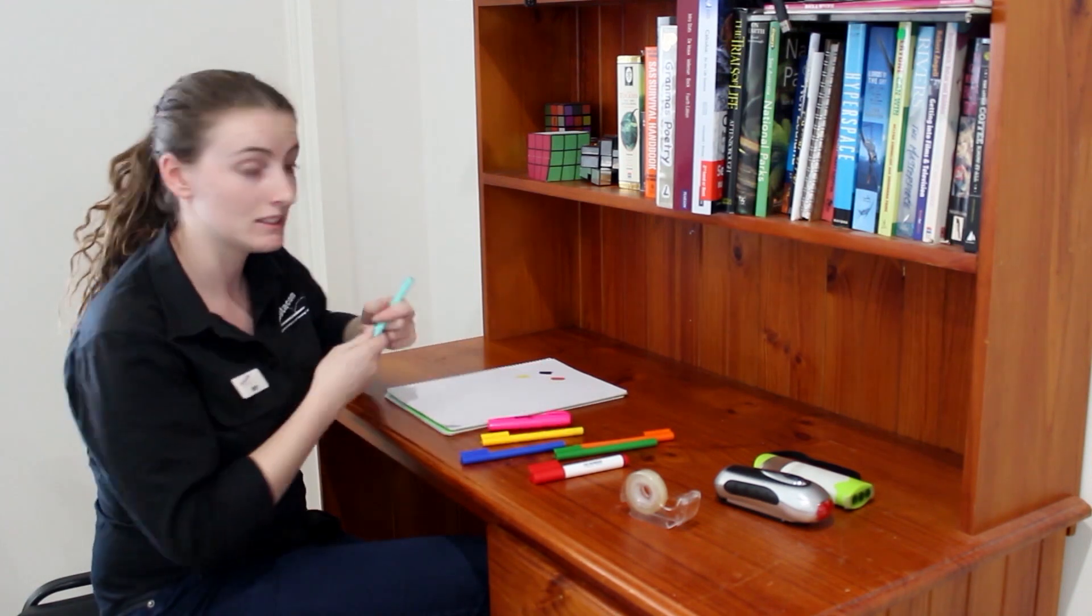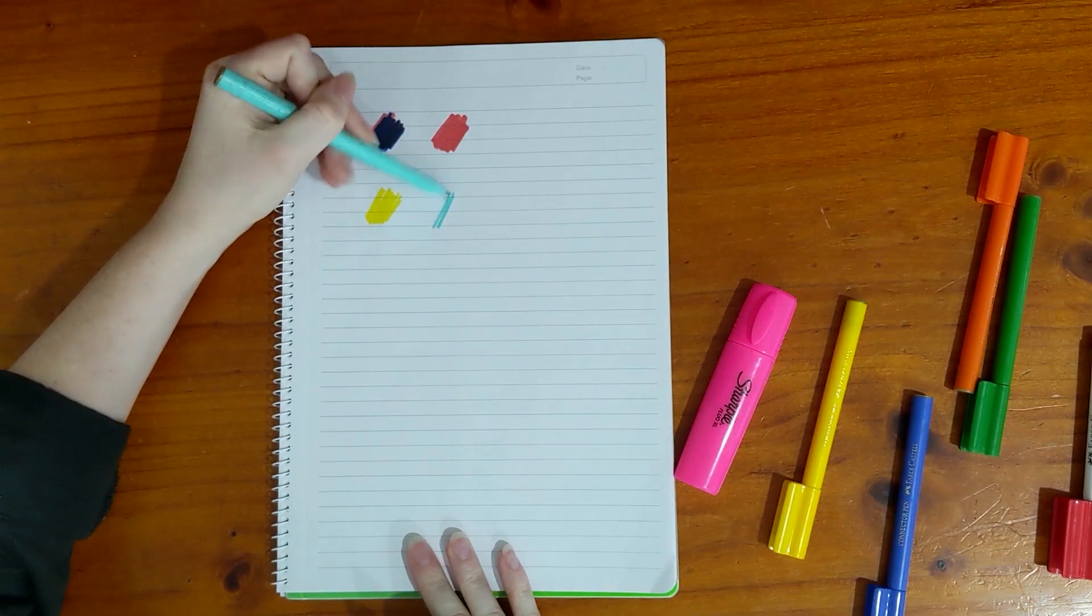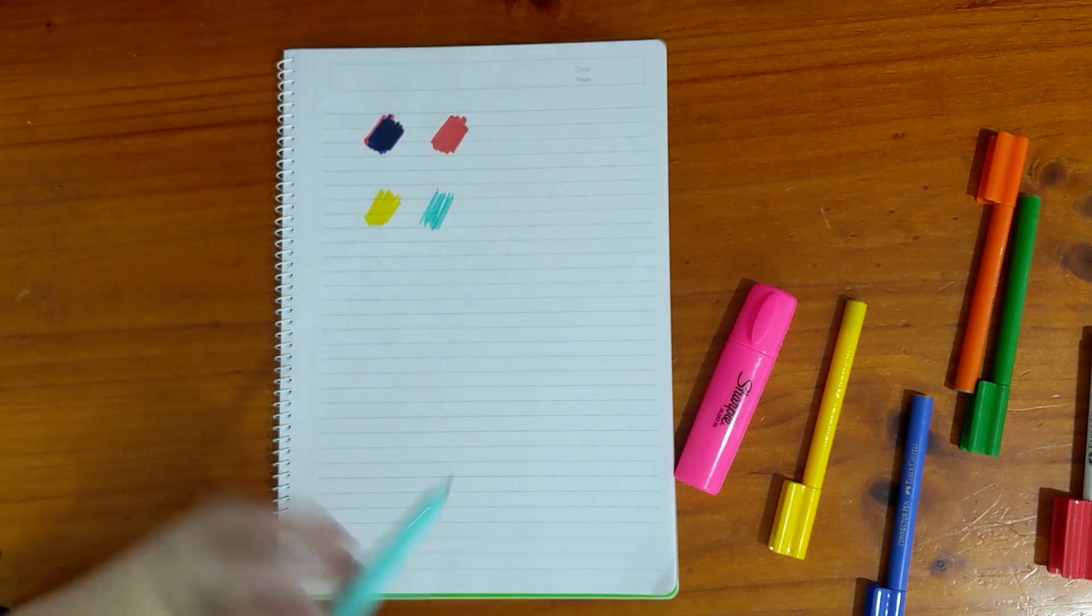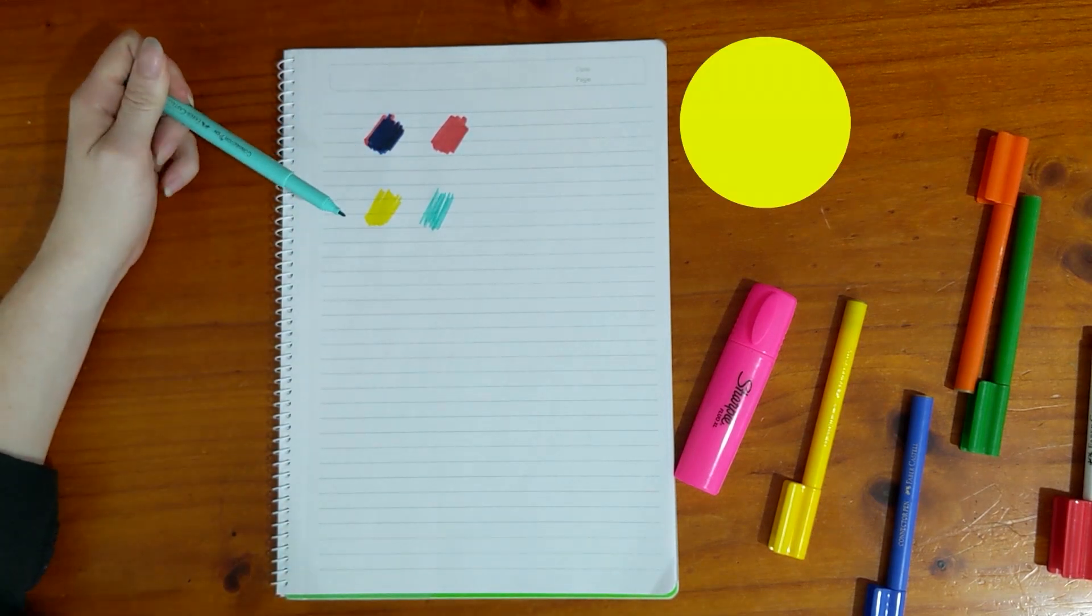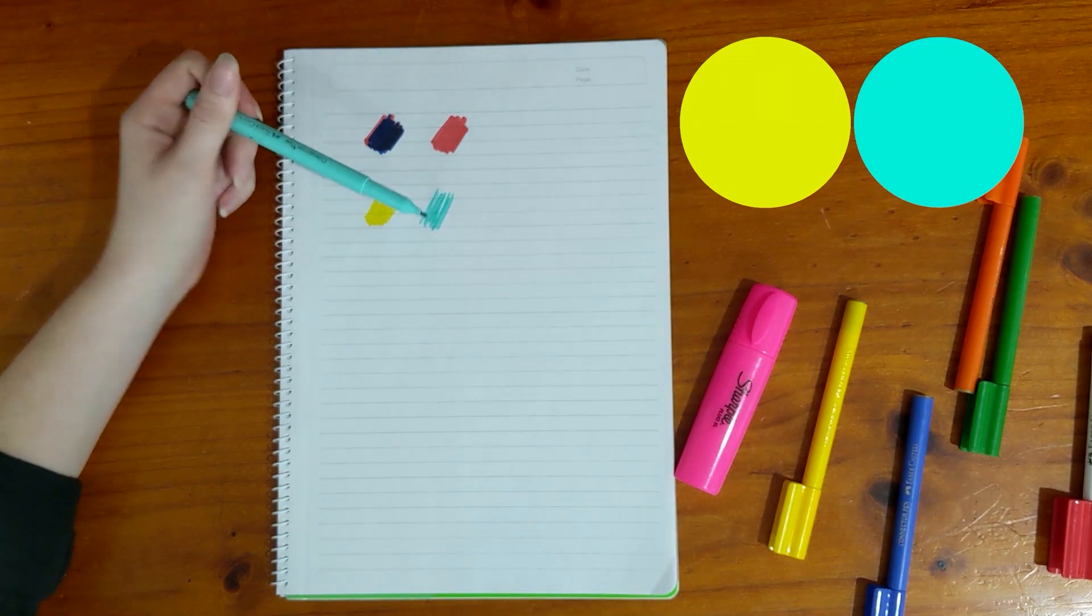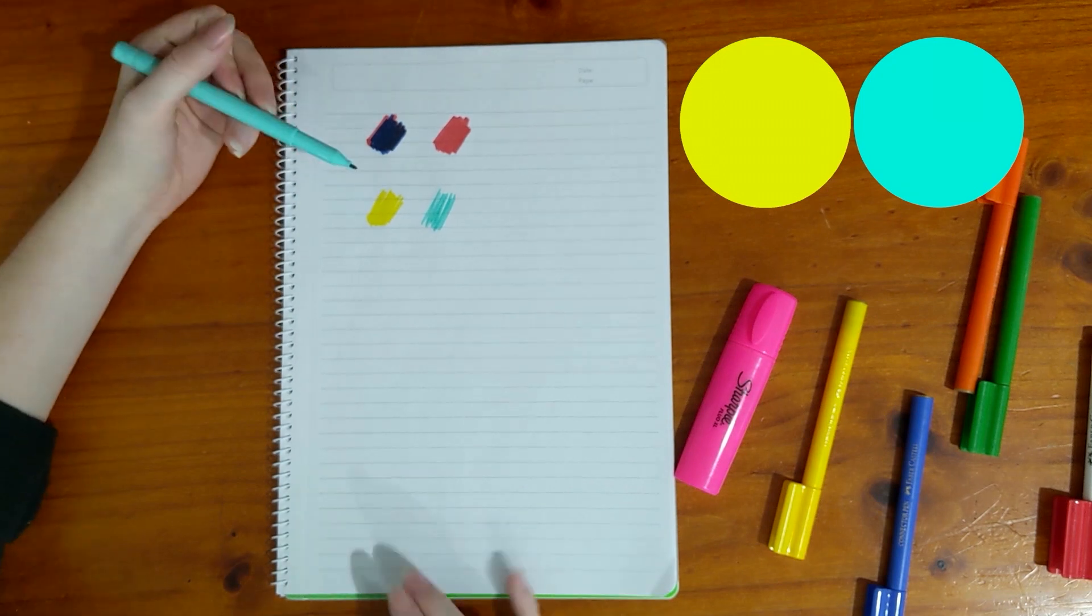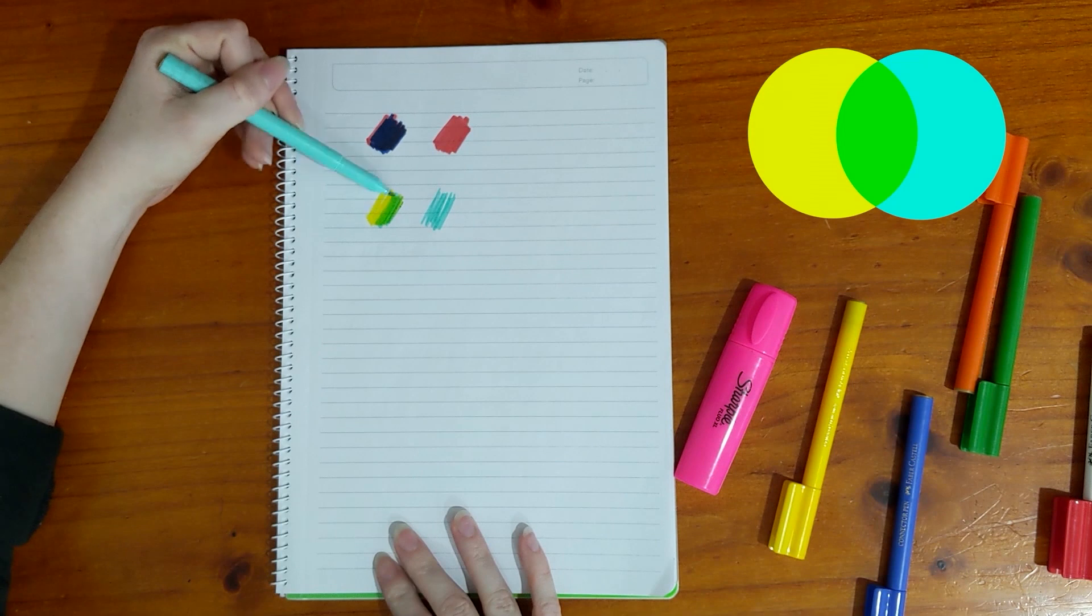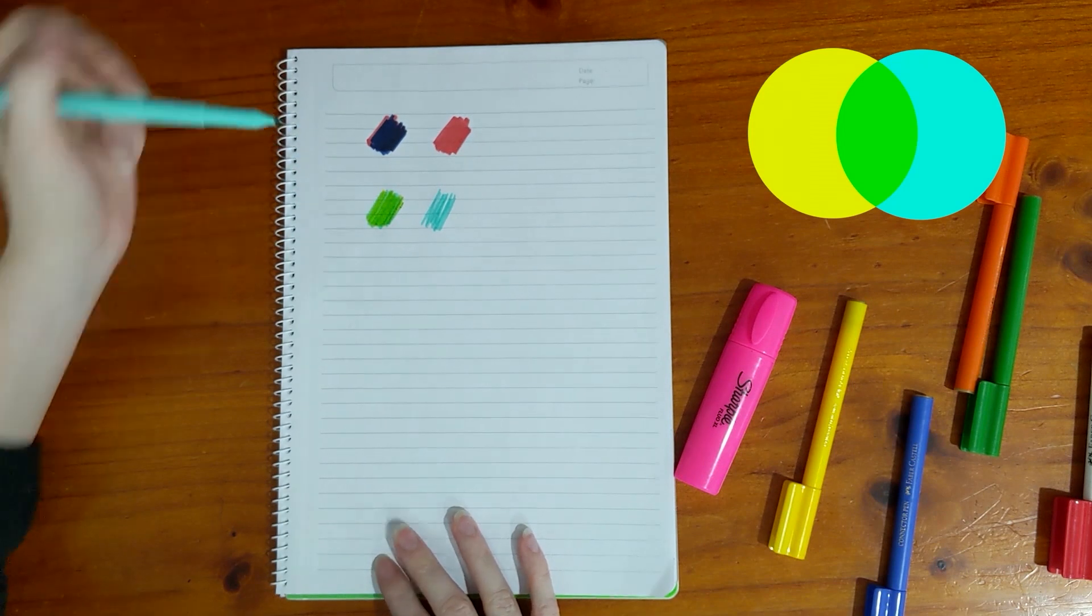If I add cyan to it as well, cyan is reflecting both blue and green. So we have yellow reflecting red and green and cyan reflecting blue and green. If we mix these together, subtracting those colours, what do we get? Green.